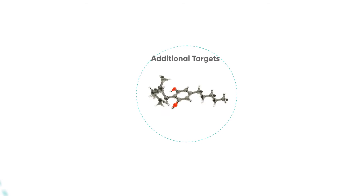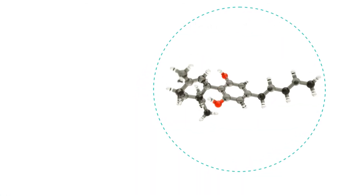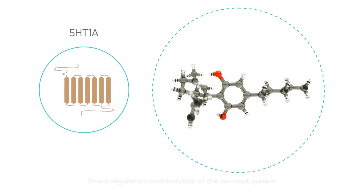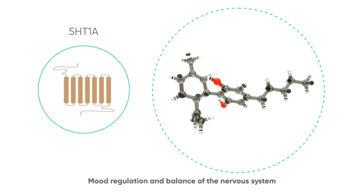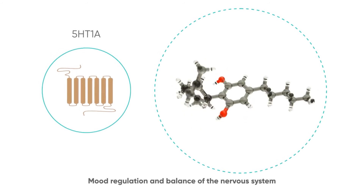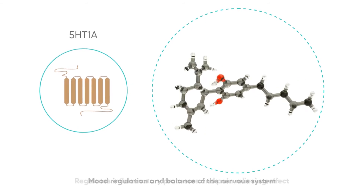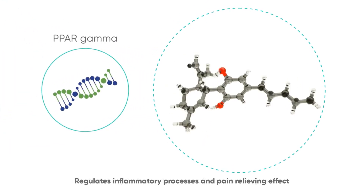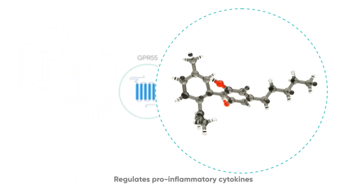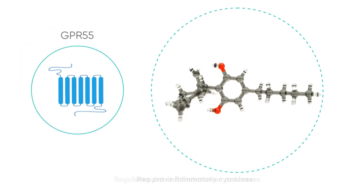CBD has many targets apart from the endocannabinoid system. CBD facilitates neurotransmission mediated by 5-HT1A receptor, a subtype of serotonin receptor. Serotonin receptors are also known to play a role in mood regulation and balance of the nervous system. Other molecular targets of CBD include PPAR-gamma, GPR-55, a G-protein-coupled receptor, and adenosine.